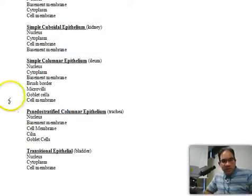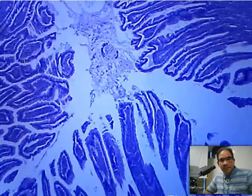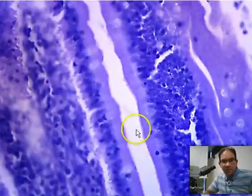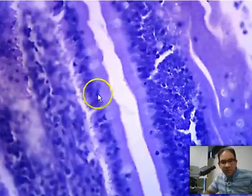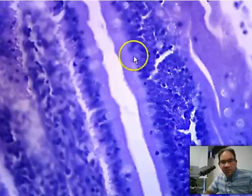Our next tissue type is simple columnar epithelium. What we've got here is a transverse cross-section of the small intestine, the ileum. You can see we've got some simple columnar cells here. This white area is open space, and these cells are the simple columnar epithelial cells.